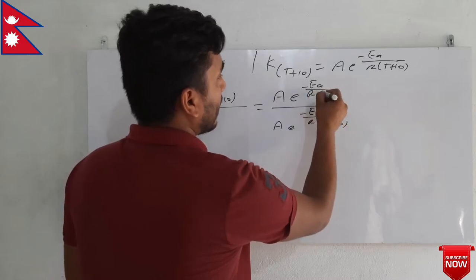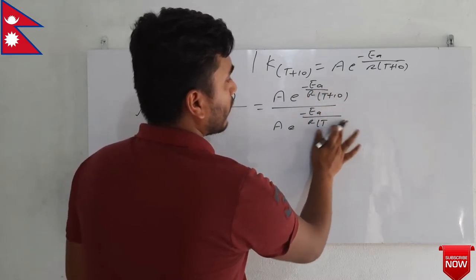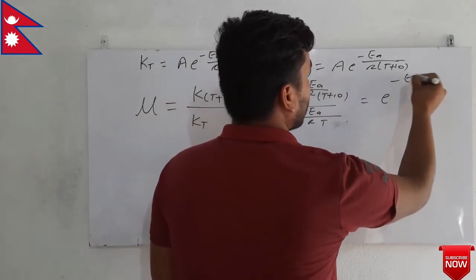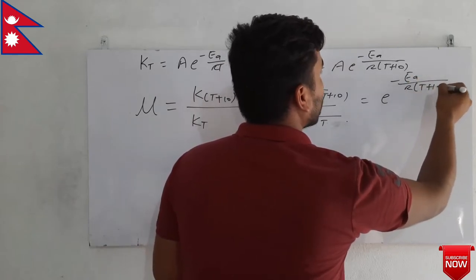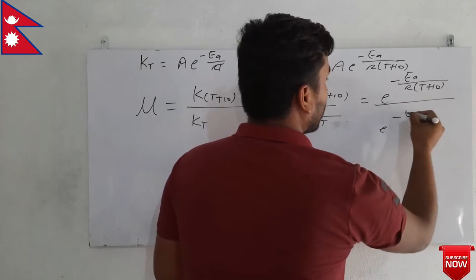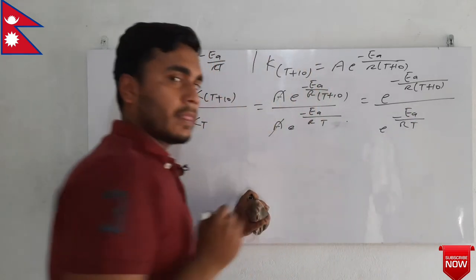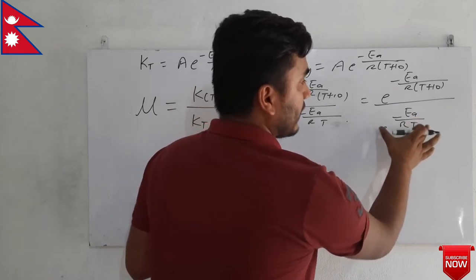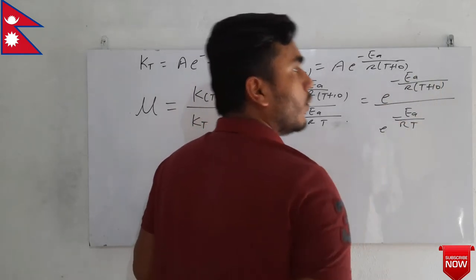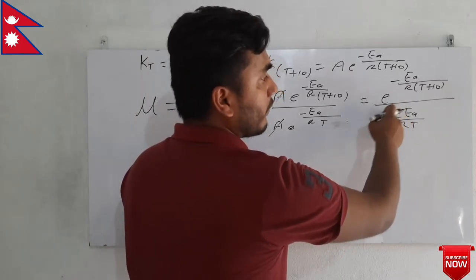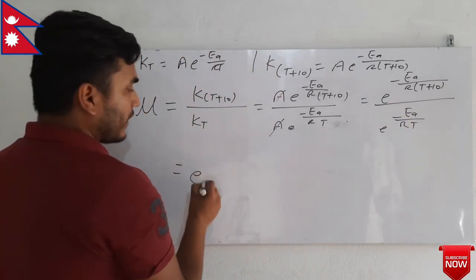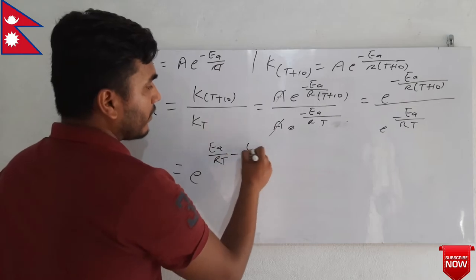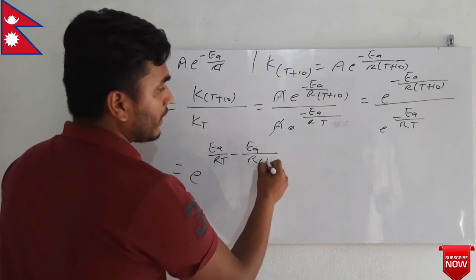We get R(T plus 10) in the numerator and RT in the denominator. Now A cancels out, and we get e to the power minus Ea by R(T plus 10) divided by e to the power minus Ea by RT. According to the rule of indices, if the bases are same, we can bring the denominator term up and the sign changes from minus to plus. So we can write: e to the power Ea by RT minus Ea by R(T plus 10).